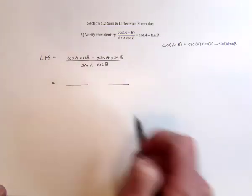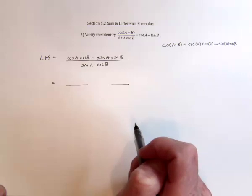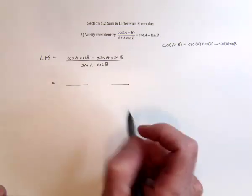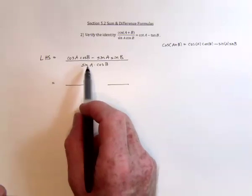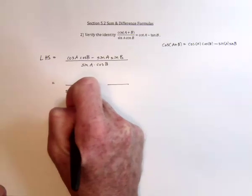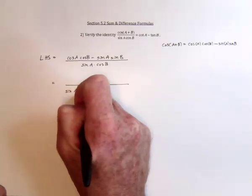Usually when we've got fractions, we take two fractions and put them together as one fraction with a common denominator. Well, you can do the opposite. You can take one fraction, break it up into two fractions, as long as the two fractions have the common denominator.